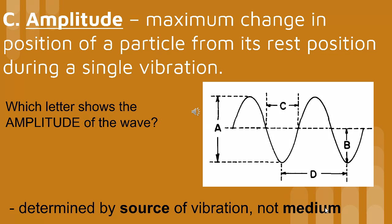Look at the picture on the right. Which letter shows the amplitude of the wave? The answer is B. Amplitude is measured from the middle of the wave to the top of the wave or to the bottom of the wave.